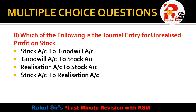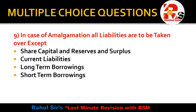Question 7 — which of the following is the journal entry for unrealized profit on stock? The options include stock to goodwill, goodwill to stock, realization to stock, and stock to realization. The correct journal entry for unrealized profit on stock is: goodwill account debit to stock account. This is a very important point.